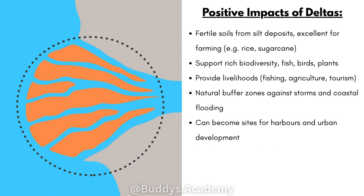So what are the positive impacts of deltas? Fertile soils from silt deposits are excellent for farming things like rice and sugarcane. They support rich biodiversity — fish, birds and plants. Deltas provide livelihoods through fishing, agriculture and tourism. They create natural buffer zones against storms and coastal flooding, and they can become sites for harbors and urban development.